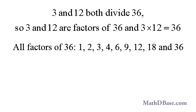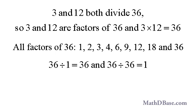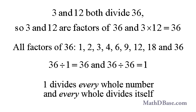Other factors of 36 are 1, 2, 4, 6, 9, 18, and 36. 1 and 36 are factors of 36 because they both divide it: 36 divided by 1 is 36, and 36 divided by 36 is 1. The number 1 divides every whole number and gives that whole number as the result. Since every whole number divides itself, every whole number is a factor of itself.